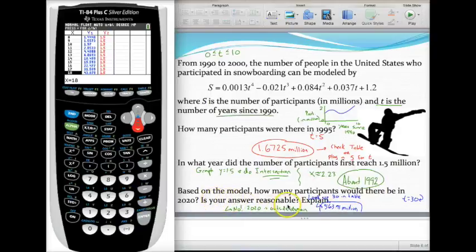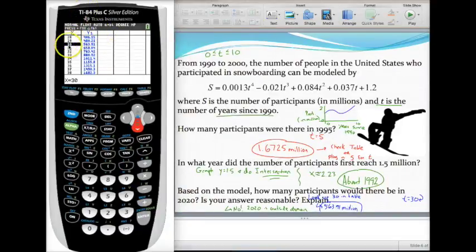There's no way that that answer is reasonable. That's over the population of the United States becoming snowboarders in 2020. The reason why this isn't reasonable is remember my domain was only between the years 1990 and 2000, so going all the way to 2020 doesn't make sense. It's outside the domain. There we go I got my table fixed. When x was 30 there's my output of my very unreasonable 563 million snowboarders. Again it doesn't work because it's outside of my domain. The function doesn't model anything after the year 2000.